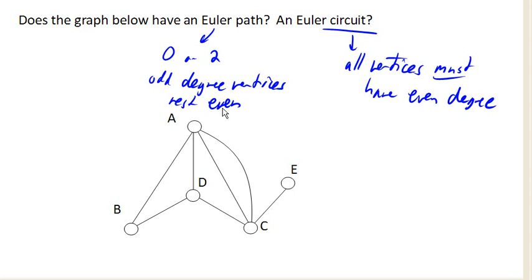Now, the reason it's okay to have 2 odd degree vertices is because with an Euler path, we don't have to get back to our starting point.